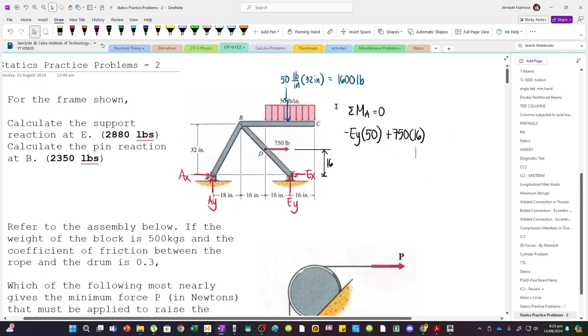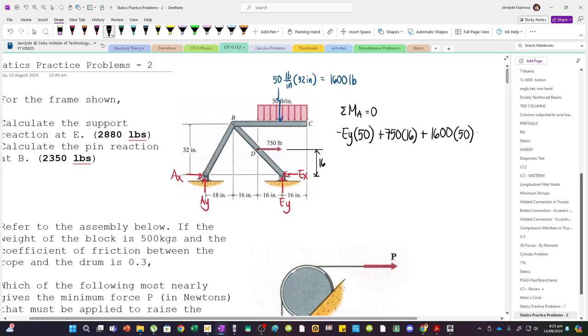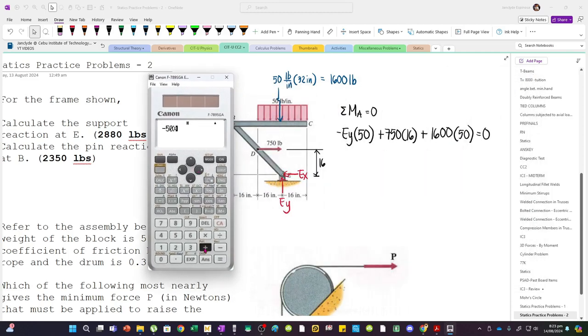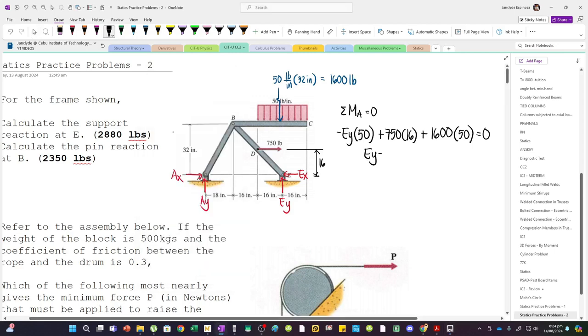And then, we have this force, 1600. So, plus. It will cause a clockwise rotation. And then, let's multiply this by 1600 multiplied by still 50. Set this to zero. We have minus 50EY. And then, plus 750 times 16. Plus 1600 times 50. Set to zero. So, this is negative 50EY equals negative 92,000. EY equals 1840 pounds.